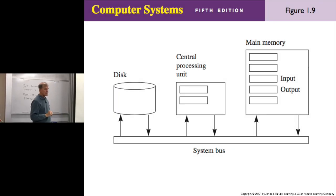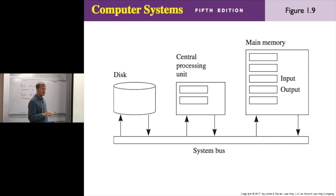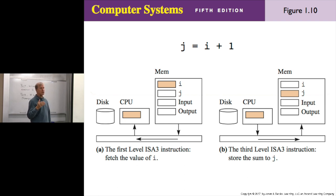In figure 1.9 is our model of all computer systems. There's a disk — which could be a physical disk with a platter and read-write head, or a solid state disk. On one end we have main memory, where information is stored, and in the middle we have the central processing unit, the CPU. As shown in figure 1.10, information flows from one part of the system to another.